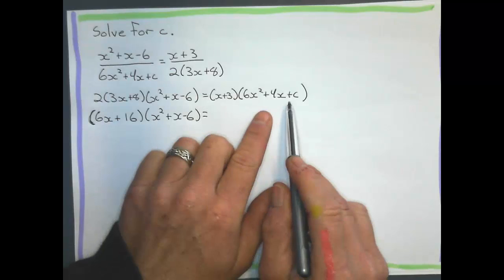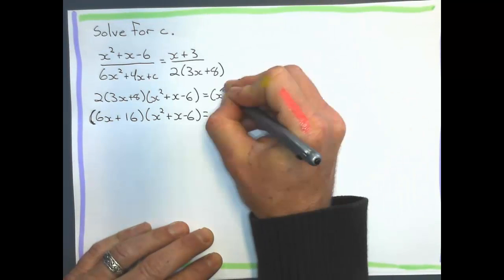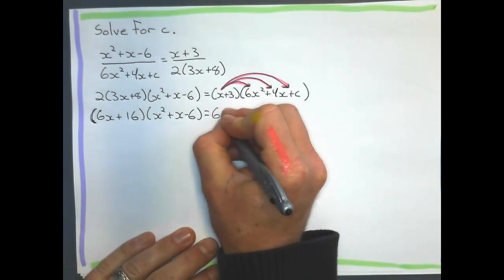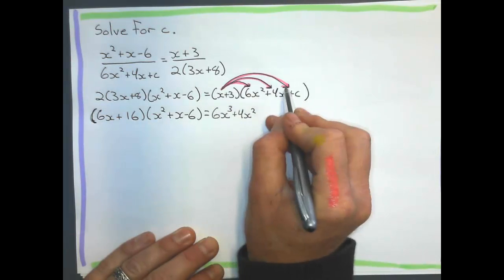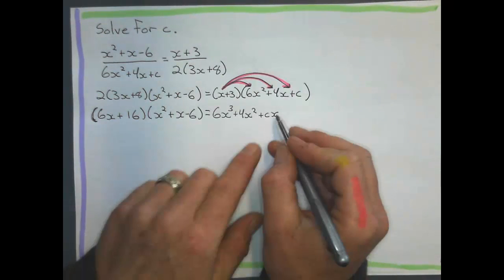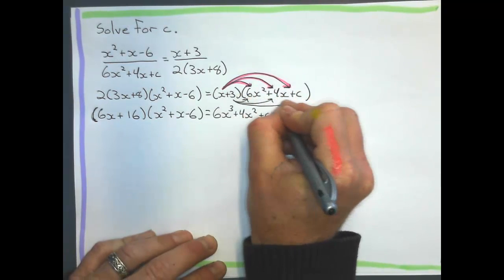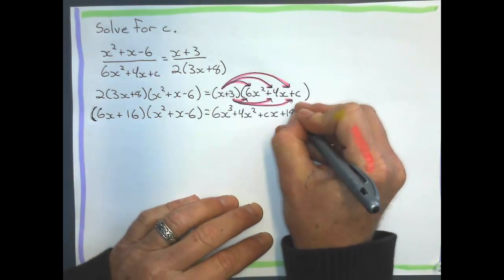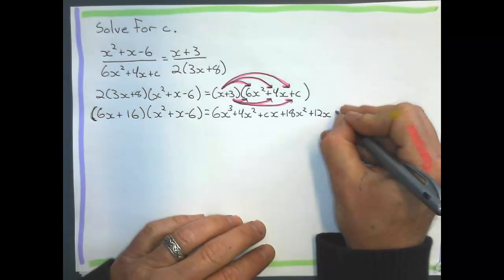Now let's clean this side up right now. So to expand a trinomial times a binomial, what I do is I take this x and I multiply that x to every term first. So I'm going to multiply that x to every term in there first. So let's do that. So x times 6x squared is 6x cubed. x times 4x is positive 4x squared. And x times C is just positive Cx. And I'm going to write the C first just to keep it in alphabetical order.